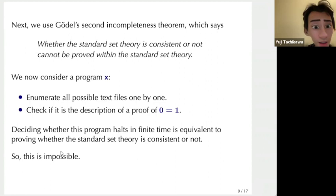We can now consider program X, which enumerates all possible text files one by one, and checks if it is the description of a proof of a contradiction. So it generates all possible text files and most of them are garbage, but sometimes it makes sense as a proof of a mathematical theorem and you check whether the end result is a contradiction.